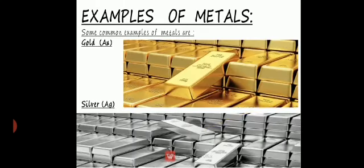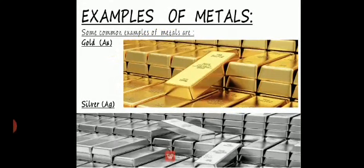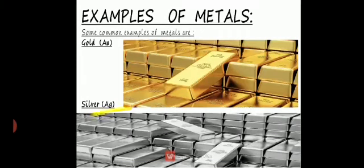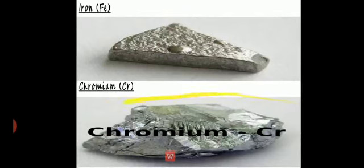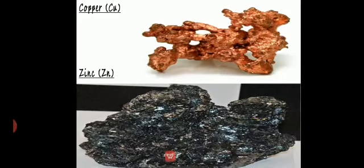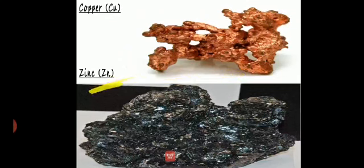Some common examples of metals are: gold, with symbol Au; silver, with symbol Ag; iron, with symbol Fe; chromium, with symbol Cr; copper, with symbol Cu; and zinc, with symbol Zn.